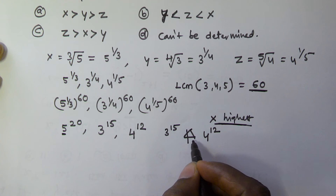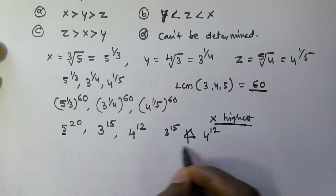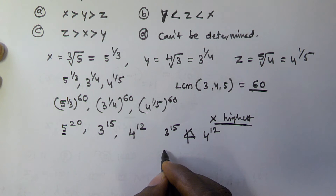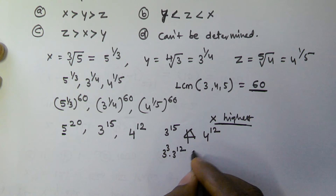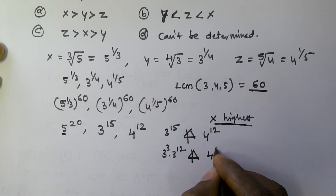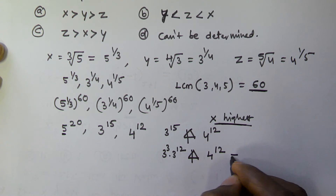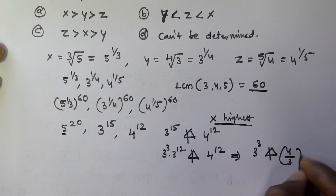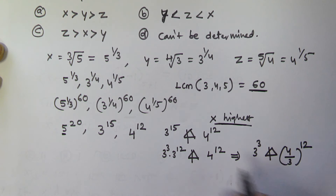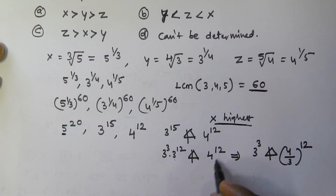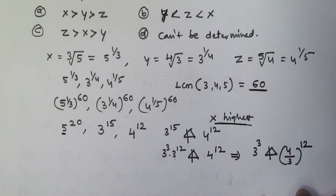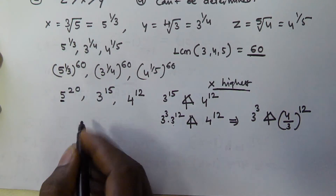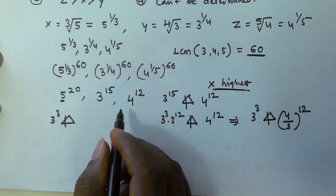The trichotomy relation shows this number can be equal to, greater than, or less than the other. So 3^15 can be written as 3^3 × 3^12, and using the trichotomy relation we compare 3^3 with (4/3)^12, since we move 3^12 across. This gives us 3^3 trichotomy (4/3)^12.